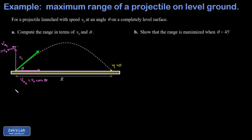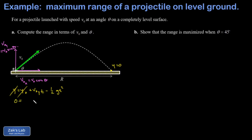I know the final Y coordinate is zero, so I'm going to use a vertical analysis to get the flight time. I have Y equals Y naught plus V₀ᵧ·T minus one-half G·T². The initial and final Y values are both zero, since I place the origin at the launch position. This gives me: 0 = V₀ sine theta · T minus one-half G·T².